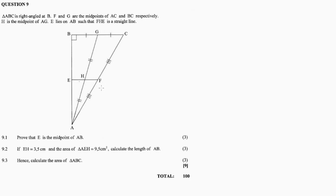F is the midpoint of AC and G is the midpoint of BC. H is also the midpoint. H lies on AB such that F, H, G is a straight line. Question 9.1 asks us to prove that H is the midpoint of AB.